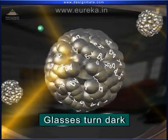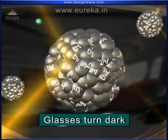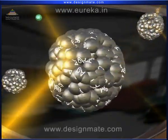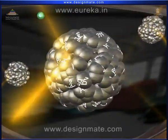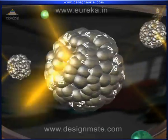Thus, the darkened glass has many such Ag clusters along with chlorine atoms.